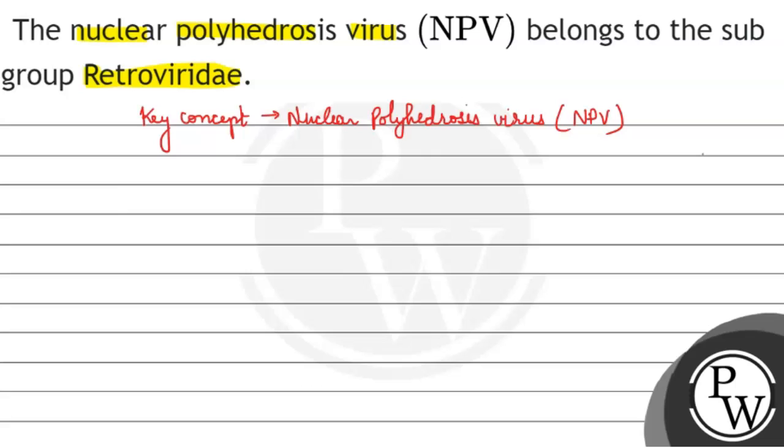This is because the virus needs protection in the external environment. And who does that protection? Polyhedrosis. Polyhedrosis is a very stable protein crystal. What does it do in the external environment? It protects the virus.